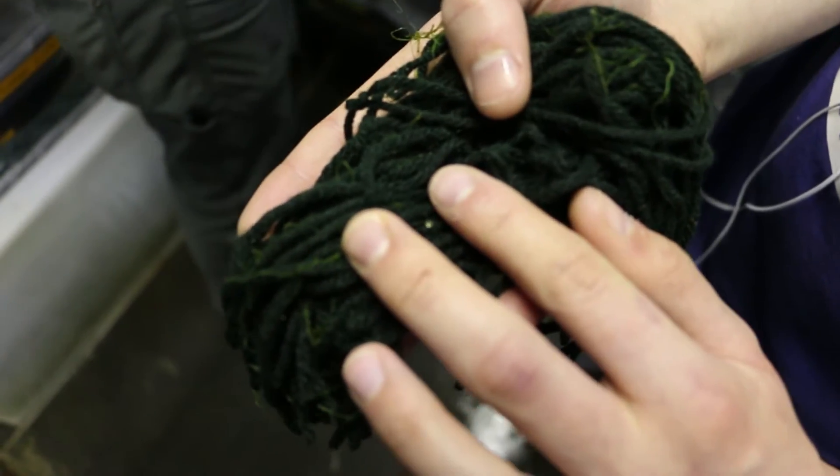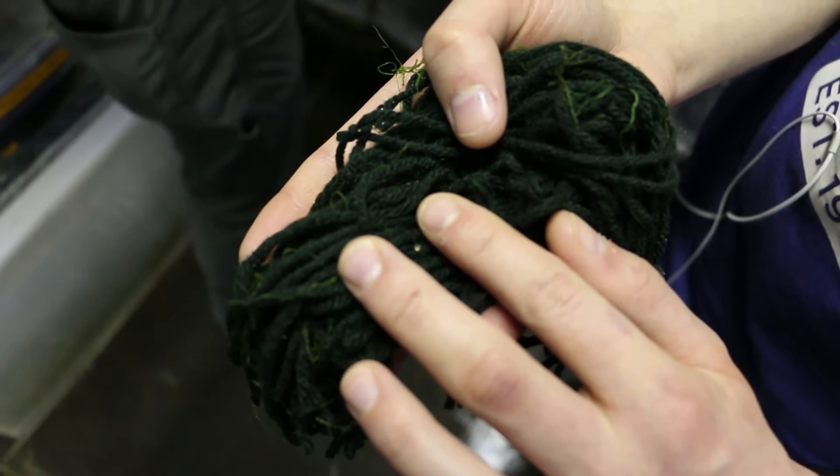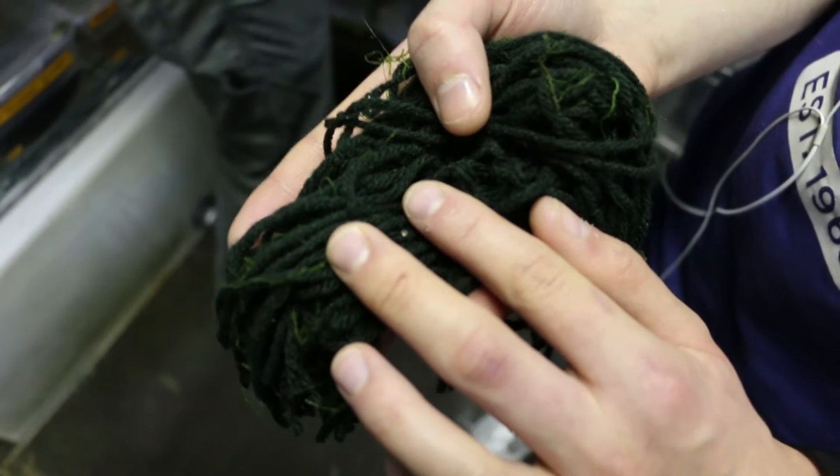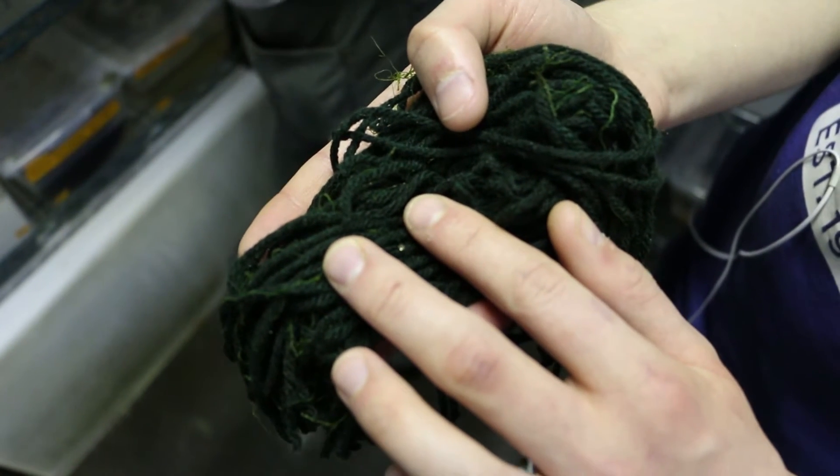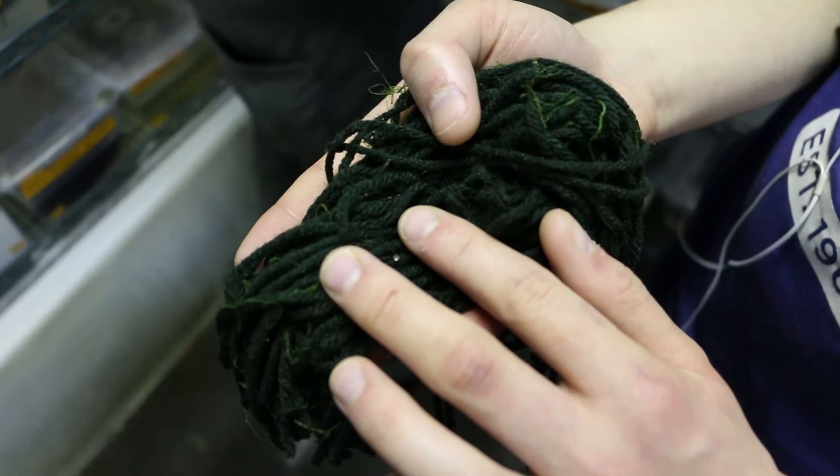So this is an egg from Poropanchax normanii, which is a type of African lampeye killifish. And they swim into the mop to lay their eggs, and it also works nicely as a place to hide.